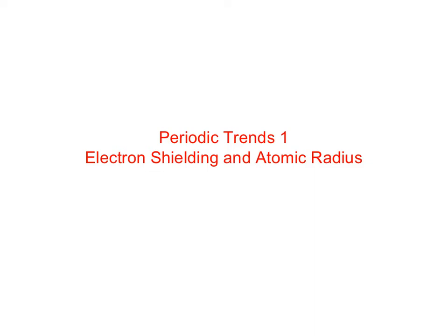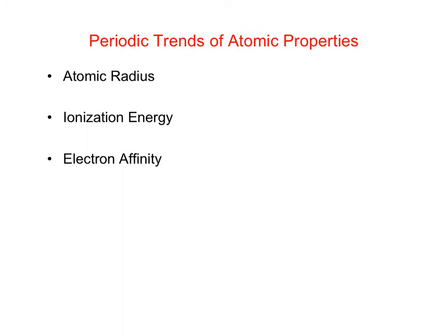In this video we're going to talk about periodic trends — properties of atoms that we can predict based on quantum mechanics and the position of an element in the periodic table. A closely related topic that helps explain a lot of the periodic trends is electron shielding. There are three atomic properties we're going to talk about in this chapter: atomic radius in this video, and ionization energy and electron affinity in two subsequent videos.